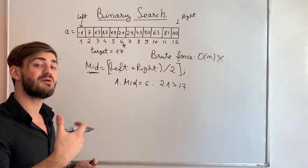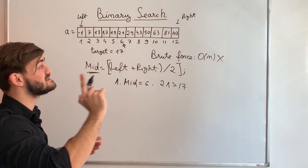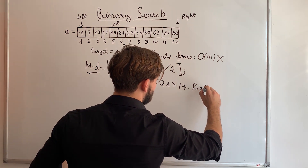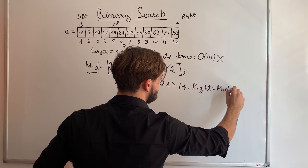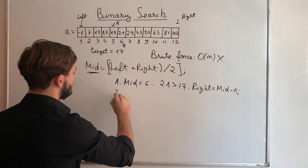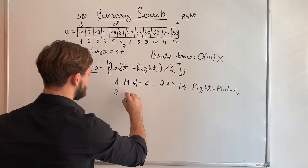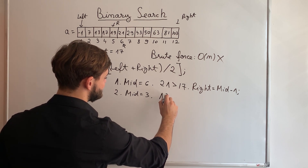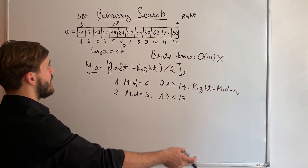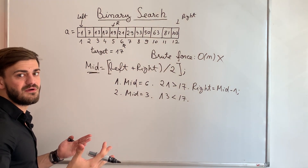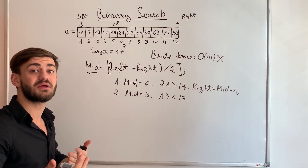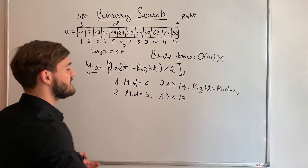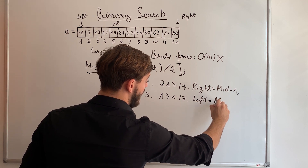So the right half is useless. I am going to look for my target value only on the left half, meaning right becomes mid minus 1, so right is now at position 5. At step 2, the middle position is floor((1 + 5) / 2) = 3, and the value at position 3 is 13, which is less than 17. Since 13 is less than the target, all elements to its left are also less than the target, so the left half is now useless.